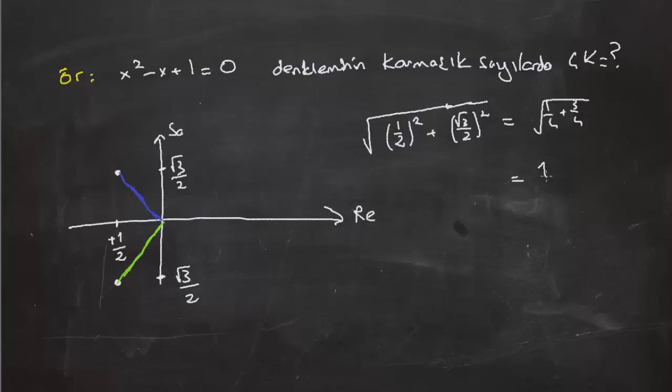Yani aslında köklerin boyunun bir olduğu gerçeğini bulduk ve onları aslında burada karmaşık düzlemde göstermiş olduk. Bir başka örnek yapalım.